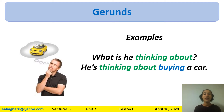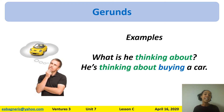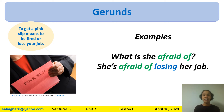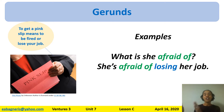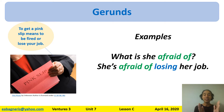Here is an example: 'What is he thinking about?' — 'thinking about' is your prepositional phrase. He's thinking about buying a car. Another example: 'What is she afraid of?' — 'afraid of' is the phrase. She's afraid of losing her job. Notice we have the phrase 'afraid of' in green, and then 'losing her job' — 'losing' is the gerund in blue.